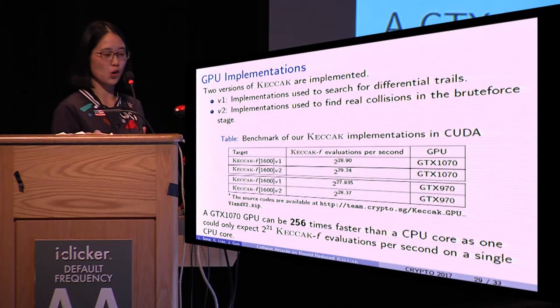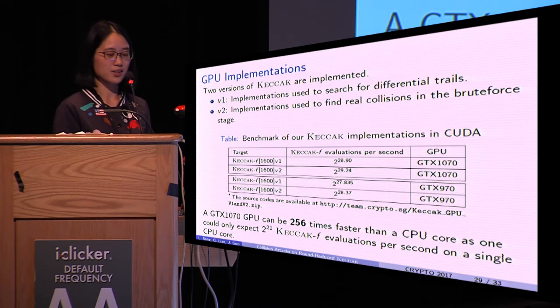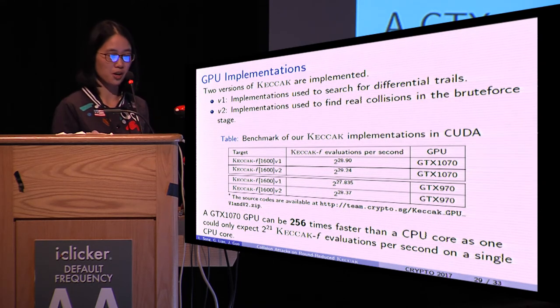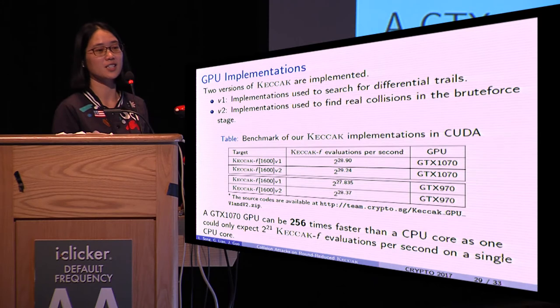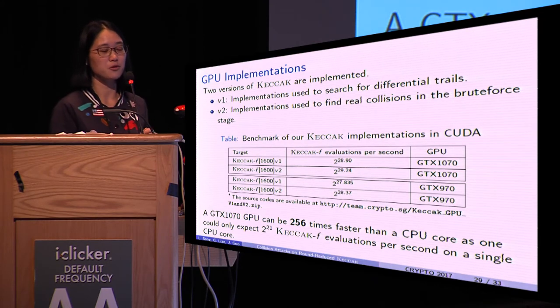This table shows the benchmark of our implementation of KECCAK in CUDA. The experiments show that a GTX 1070 GPU can be 256 times faster than a CPU core.